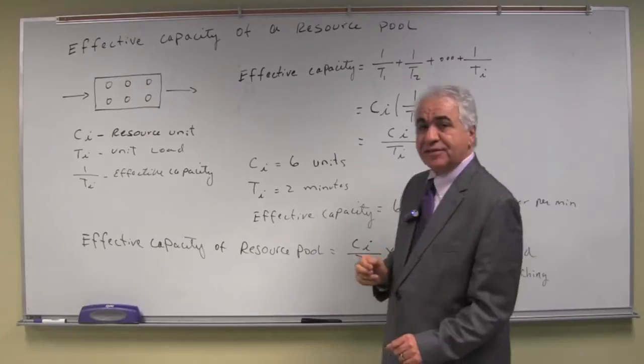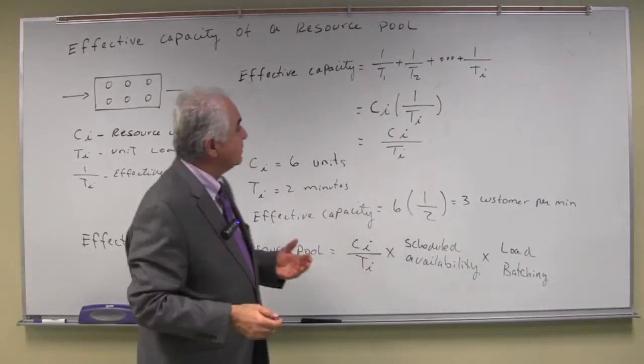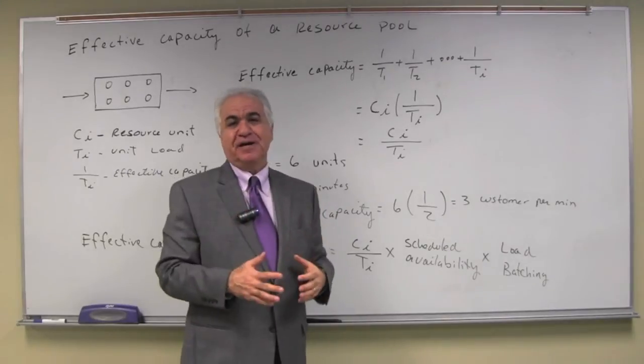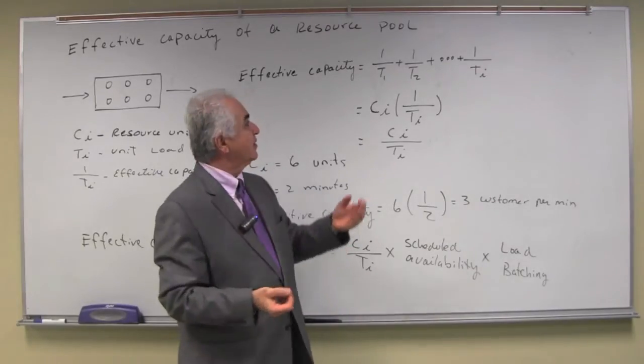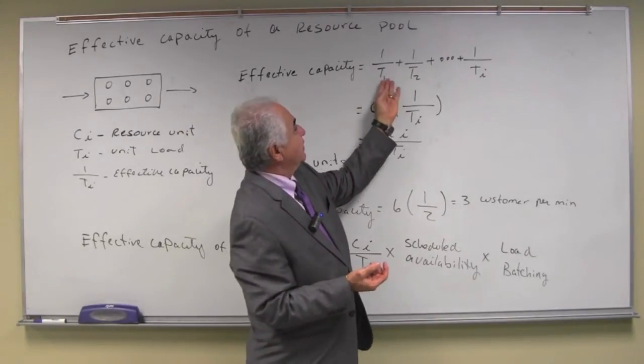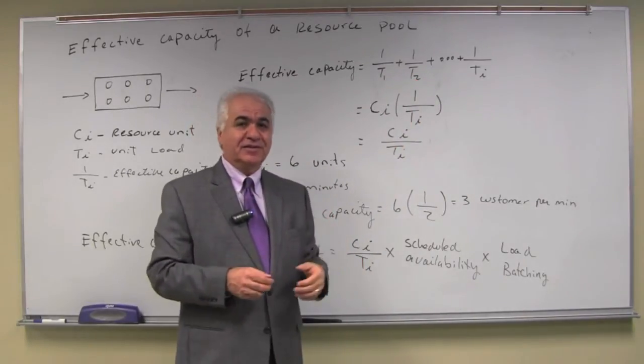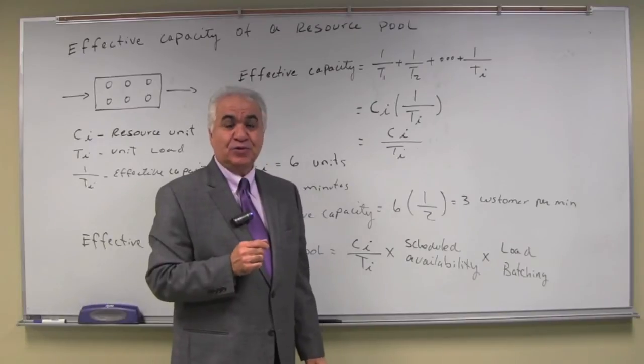Therefore, the effective capacity of the resource pool is the sum of the effective capacities of each resource unit. If you sum the effective capacity of each resource unit, you have the effective capacity of this resource pool.